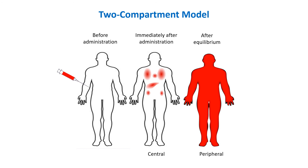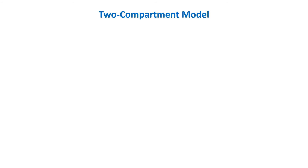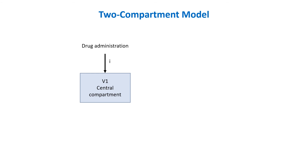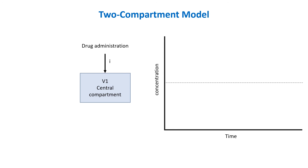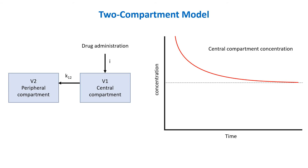Later, the drug then distributes from the central compartment to the peripheral compartment, representing muscle, skin, and fat. After drug administration, the drug concentration in the central compartment decreases rapidly as it distributes into the peripheral compartment. This is called the distribution phase, which accounts for the initial rapid decline in serum drug concentration. It is denoted by K12.